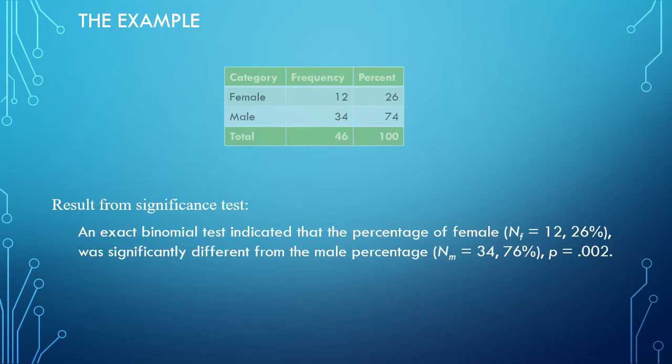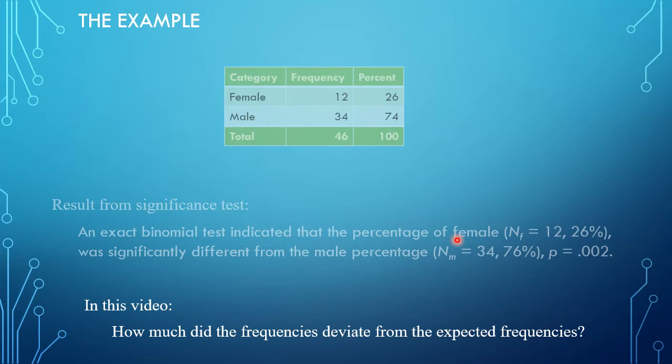I have separate videos on that, and that turned out to be significant with a p-value of 0.002. Usually below 0.05 would be considered significant. In this video, we're going to look at whether that is considered a big difference or not.